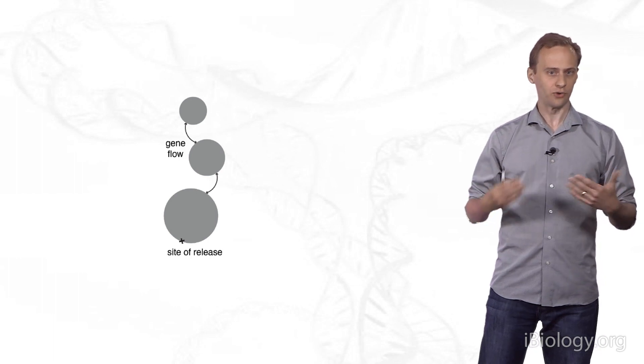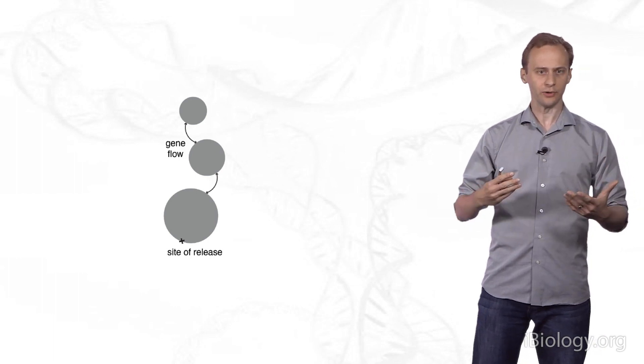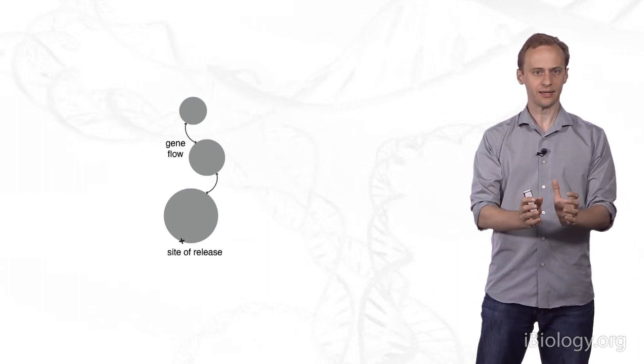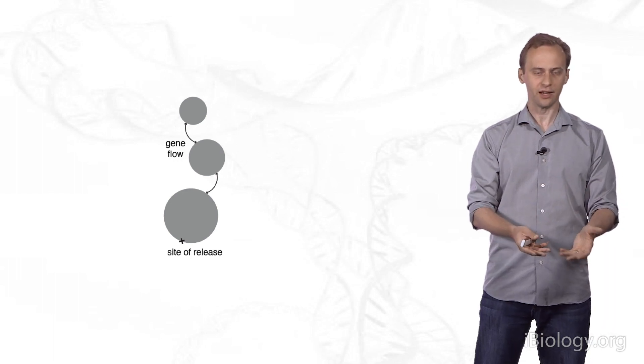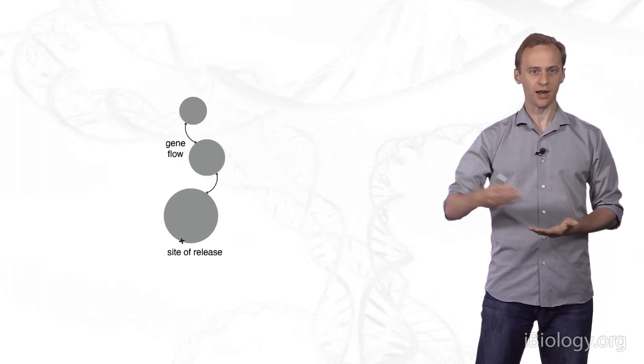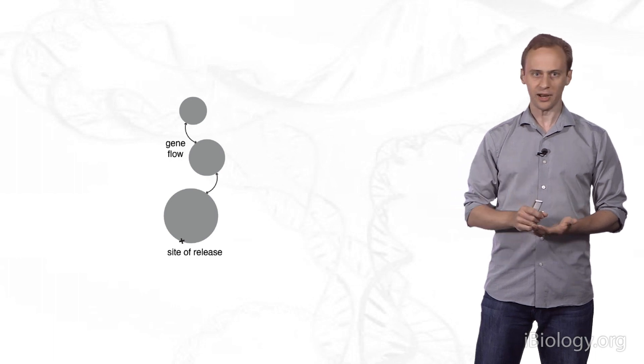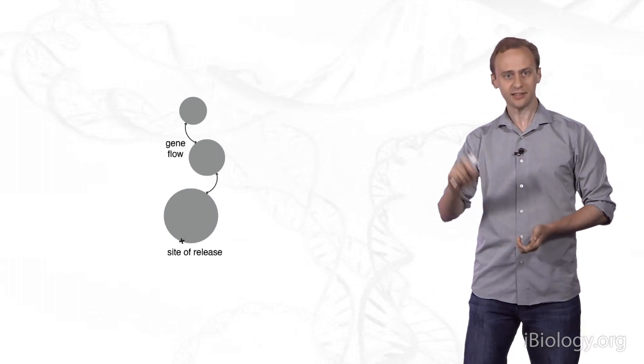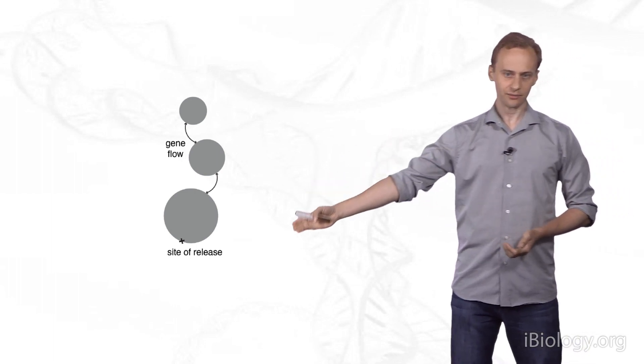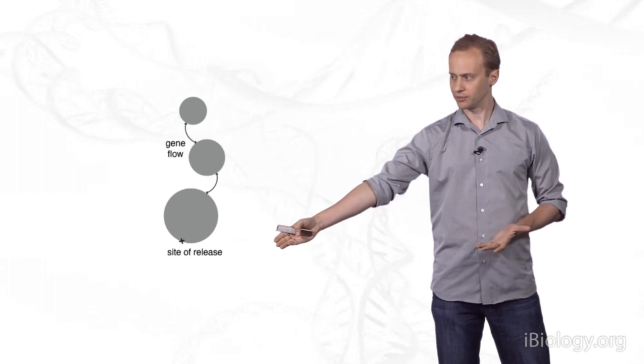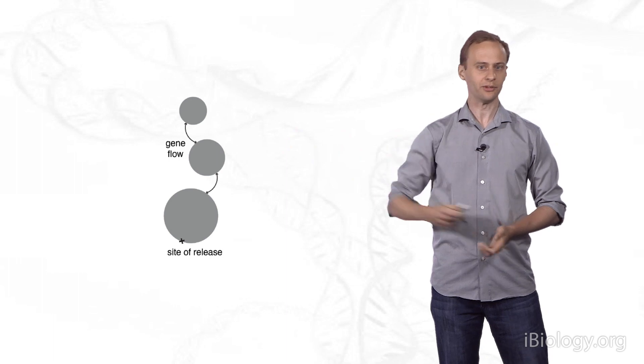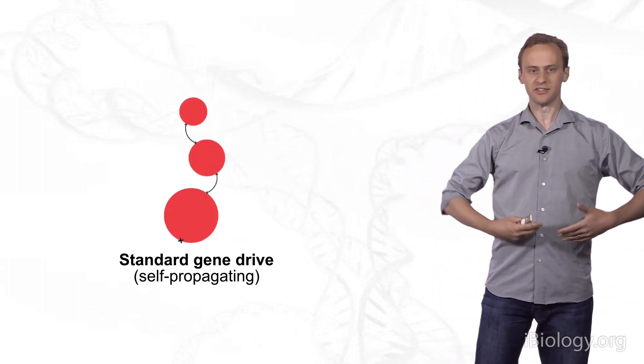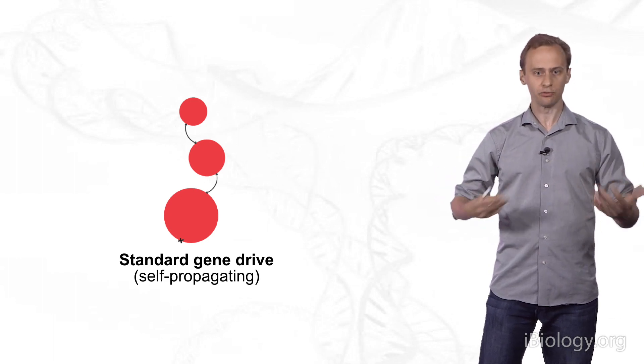When we're talking about different kinds of drive systems, it's usually useful to think about them spatially. What happens if you release a particular number of organisms into a local population of the target species? How will that drive system then spread? We can think of it as releasing organisms at a particular site and observing how the drive system is predicted to spread. Let's start with what we think of as a standard gene drive, a self-propagating drive.